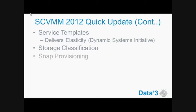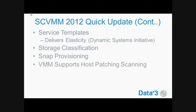We can classify our storage now — we might have fibre channel storage as gold and standard storage as silver. So when a user requests a virtual machine, we can define what classification of storage that virtual machine should be placed on. It supports snap provisioning, so if we're provisioning a virtual machine from a template that exists on the same LUN, we can snap it, reducing provisioning time. It also supports host patch level scanning — within VMM, even though we can't deploy patches using VMM, we can at least monitor our patch compliance against all of the hosts within our farm.